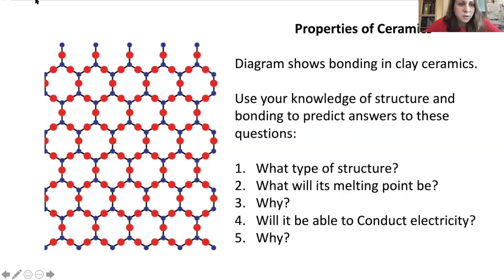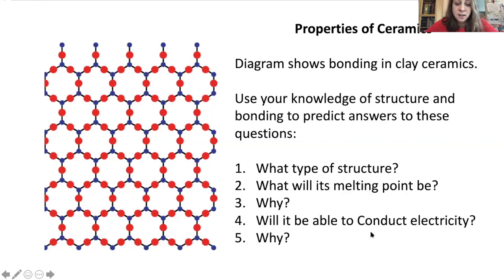This diagram here is a simplified bonding diagram of clay - the structure of clay ceramics. Have a look at that diagram and think about what you already know about structure and bonding. What does it look like, what are the dots, what are the lines? Using your knowledge of structure and bonding, I want you to predict: what type of structure is it, what will its melting point be and why, and will it be able to conduct electricity - yes or no and why? Pause now and write down your answers.